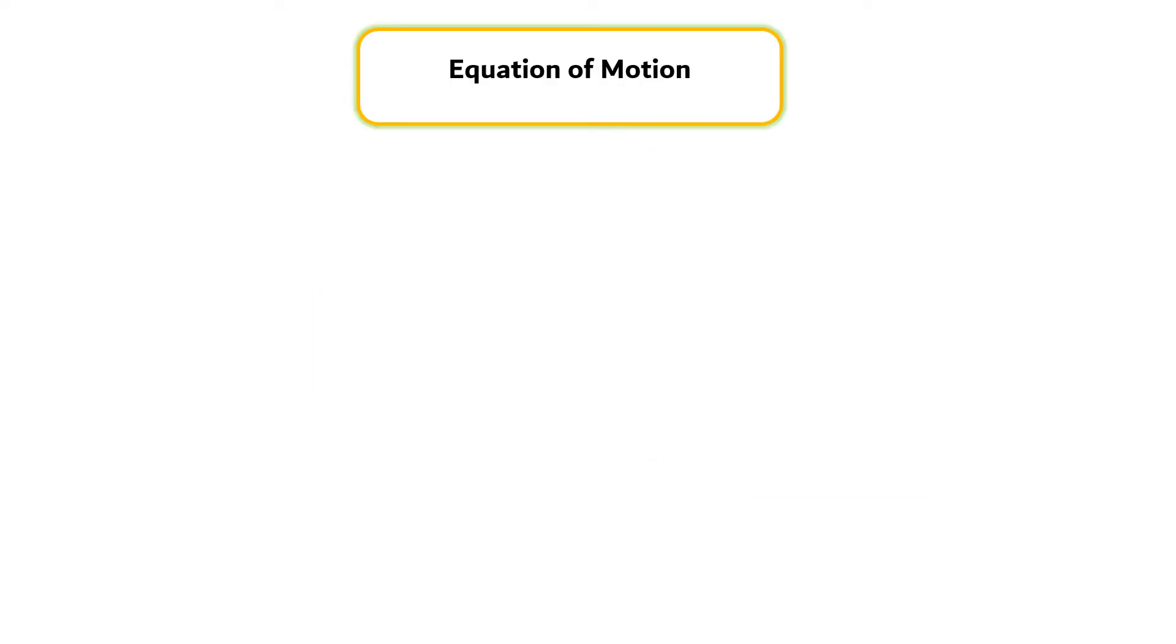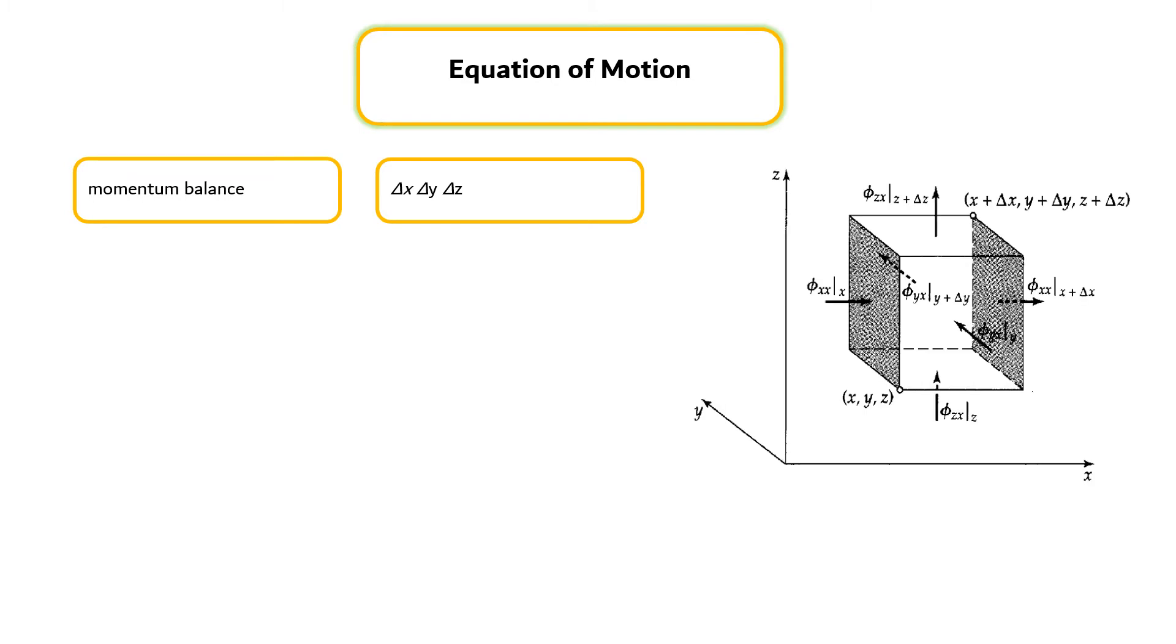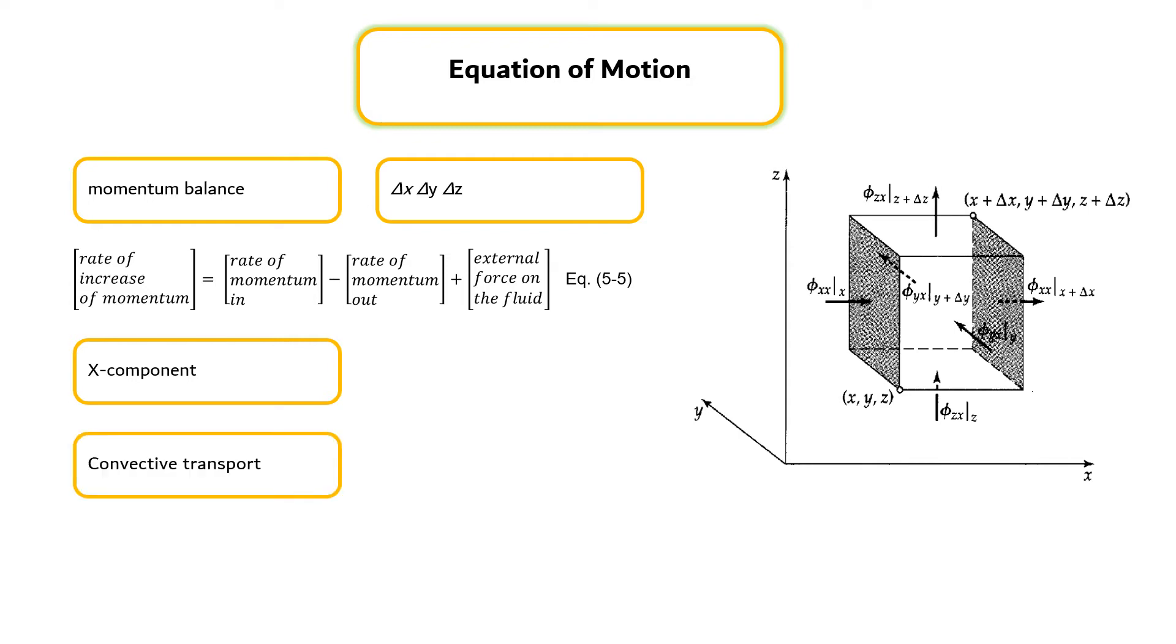Equation of Motion is developed by writing a momentum balance over a volume element, delta x, delta y, delta z, fixed in space through which a fluid is flowing as shown in the right figure, and can be expressed by Equation 5.5. First, let's consider the rate of flow of the x-component of momentum into and out of the volume element shown in the right figure. Momentum enters and leaves delta x, delta y, delta z by two mechanisms: convective transport and molecular transport.